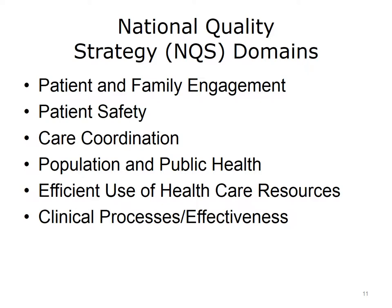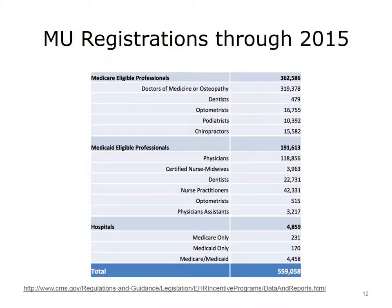Within these domains, there are different quality measures that must be used, based on the rules described previously. In the next few slides, we will look at the number of registrations and payments made through the Meaningful Use Program. This data is released monthly by the Centers for Medicare and Medicaid Services, or CMS, and then periodically summarized. What we will look at here is the data through the end of 2015.